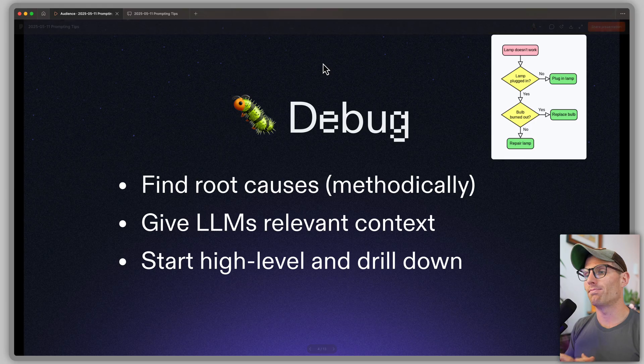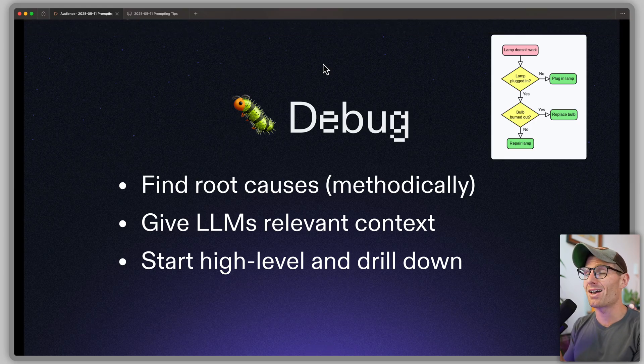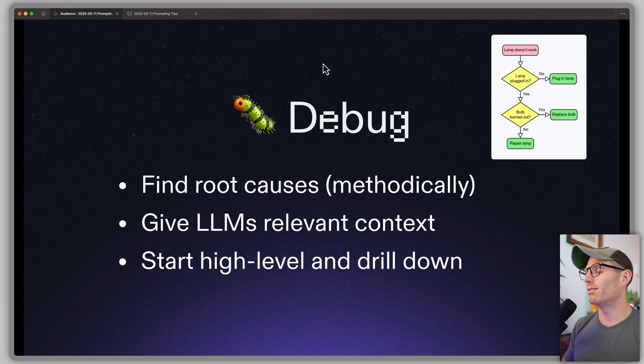Debugging is important. When you're debugging, you want to give LLMs relevant context — you can find that in the console and debug logs. Start high and drill down. A lot of times I advocate for very specific prompts, but if something doesn't work, it's totally fine as a first pass to say, 'Agent, this thing isn't working, fix it.' Start high level. If that doesn't work, then you start to drill down.